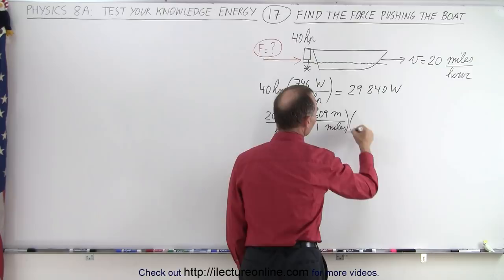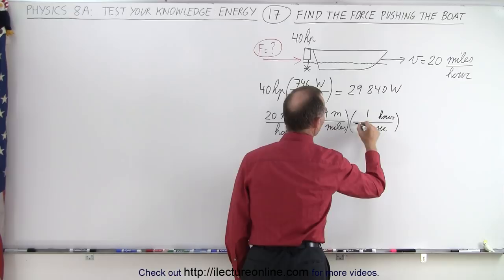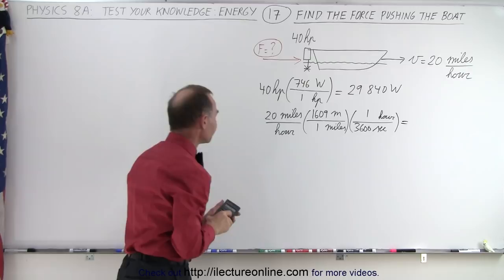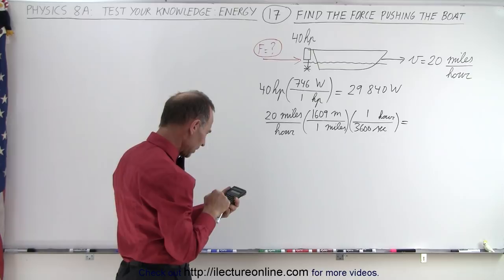And then we need to convert hours to seconds. One hour 3600 seconds. And that will give us the velocity in terms of meters per second. So 20 times 1609 divided by 3600.